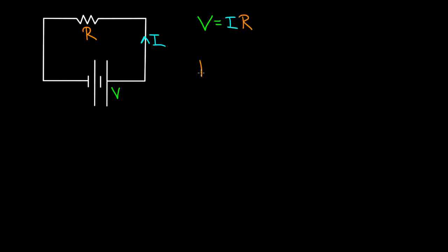So this pretty much gives you a way to define resistance. The resistance of this resistor is defined to be the amount of voltage applied across it divided by the amount of current through it.